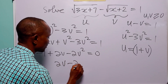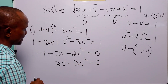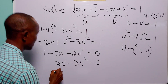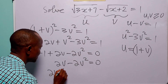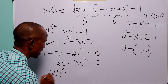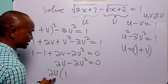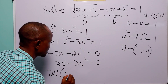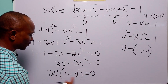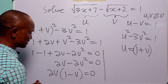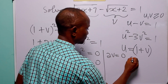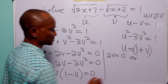We can factorize this equation because we have a common factor of 2v. Factoring out 2v, we get 2v times (1 minus v) equals zero. This statement means that either 2v equals zero or 1 minus v equals zero.